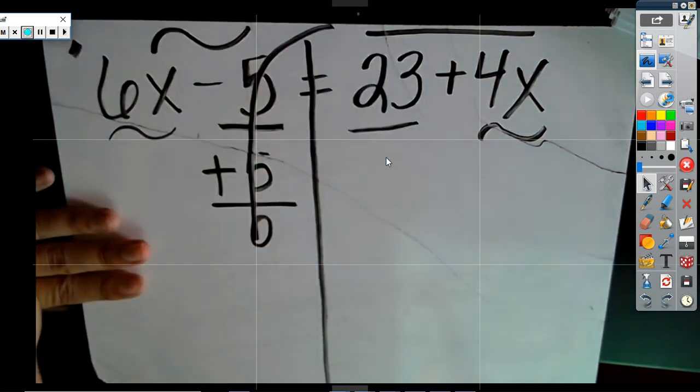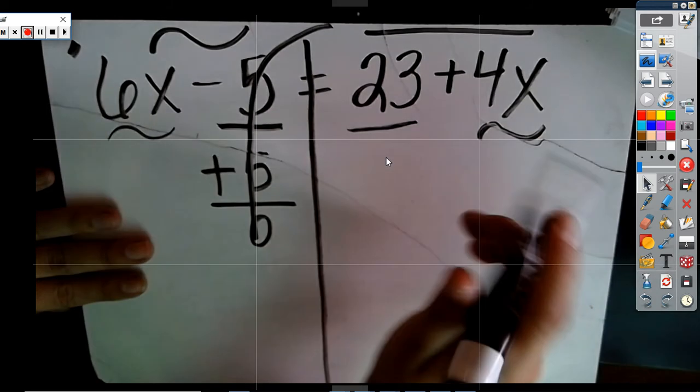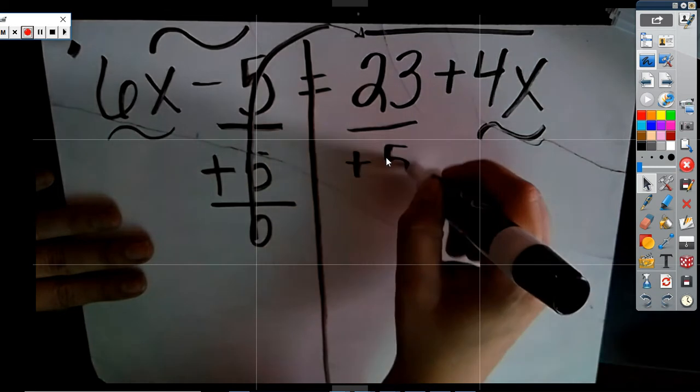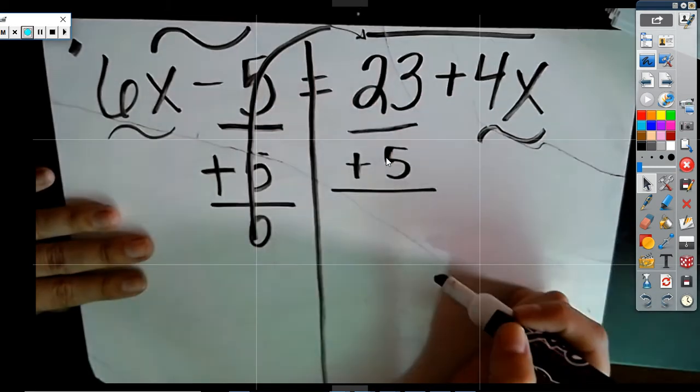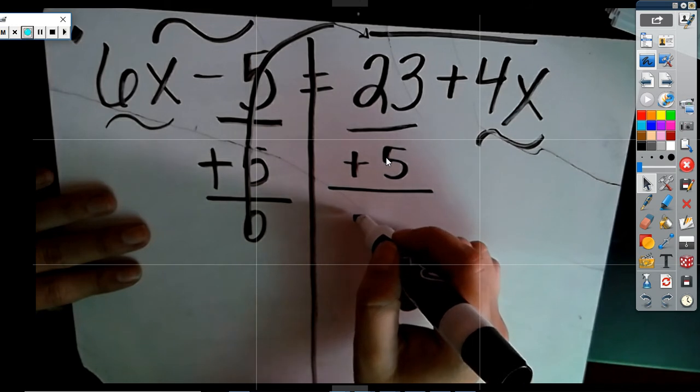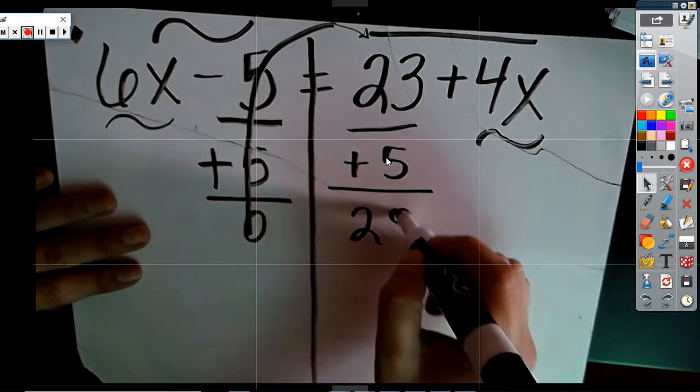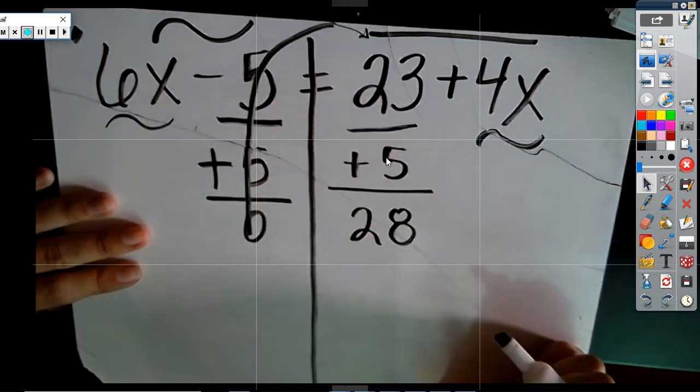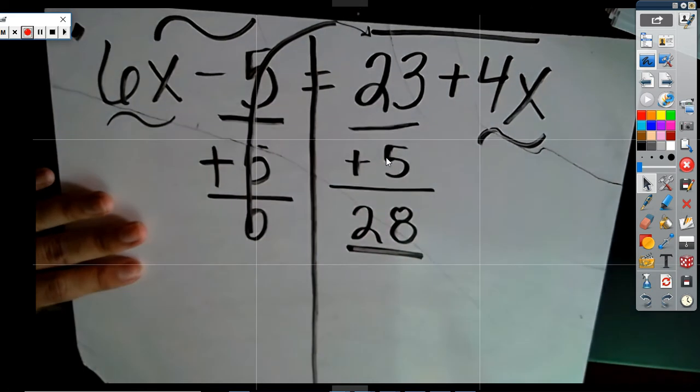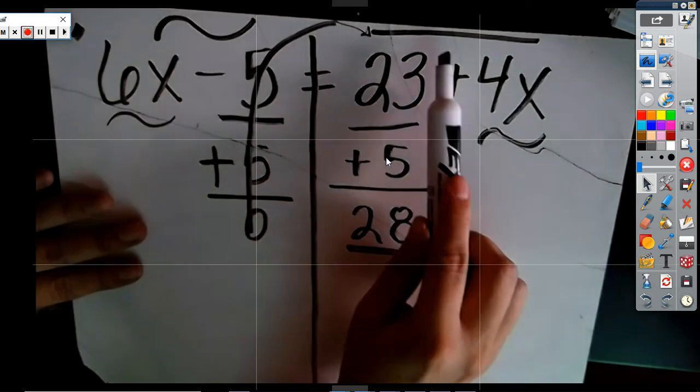Which one do I move it to, Christian? The 23 or the 4X? Okay, the 23. All right. And so, when I add them, I get what, Luis? What do I get? 23 plus 5. Perfect. And this is underlined. I'm constantly checking. Is it underlined? Does it stay? Does it go? So, underlined, underlined, stay.